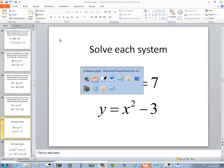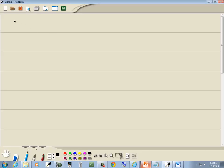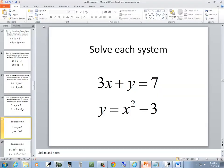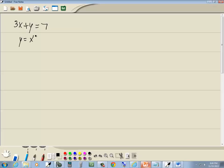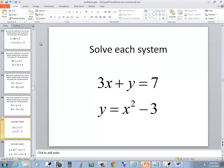Let's solve this system. We've got 3x plus y is equal to 7, and y is equal to x squared minus 3.